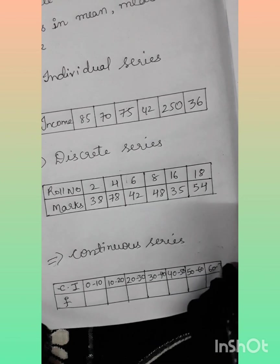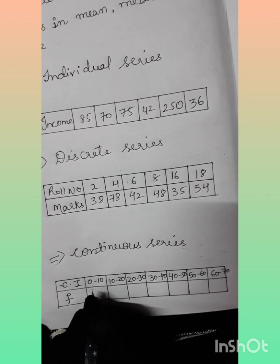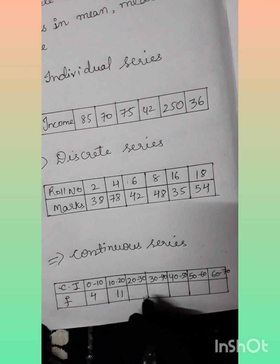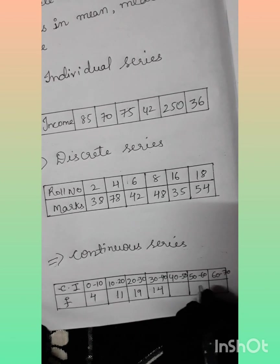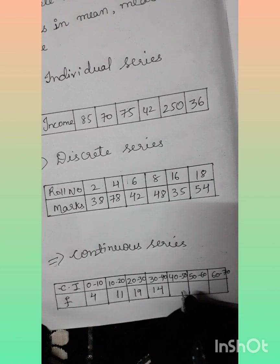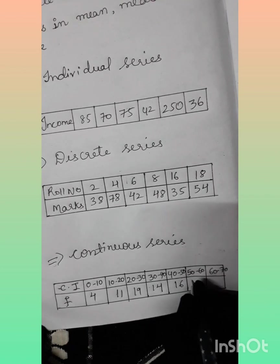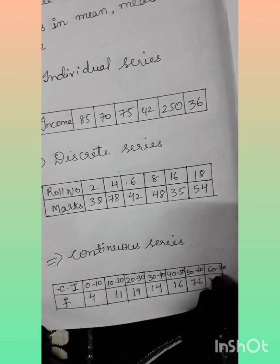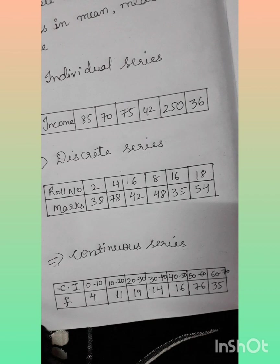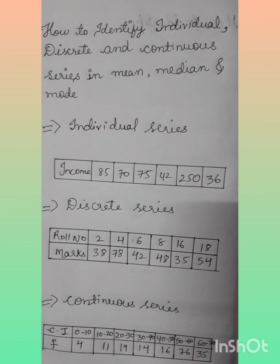If the question is in the form of class intervals, we can say this is a continuous series, followed with the frequency. The formula for continuous series mean is: mean equals sigma fm by n. For calculating mean, median, and mode, there are many formulas. Here I have just given one example for each.